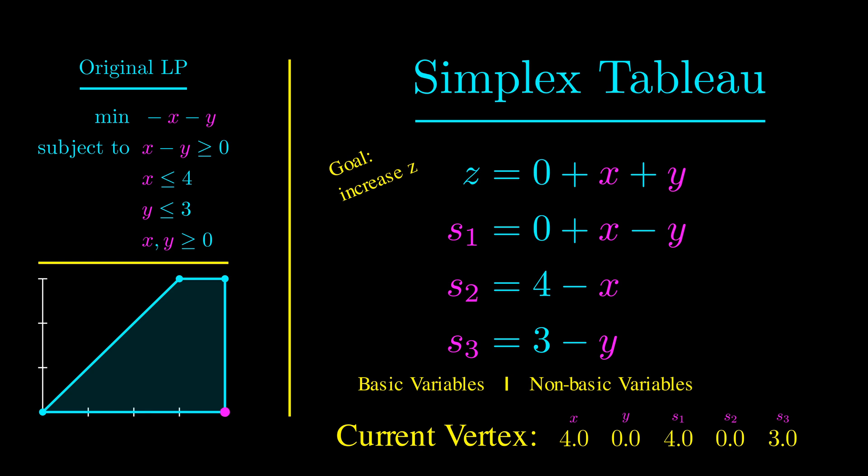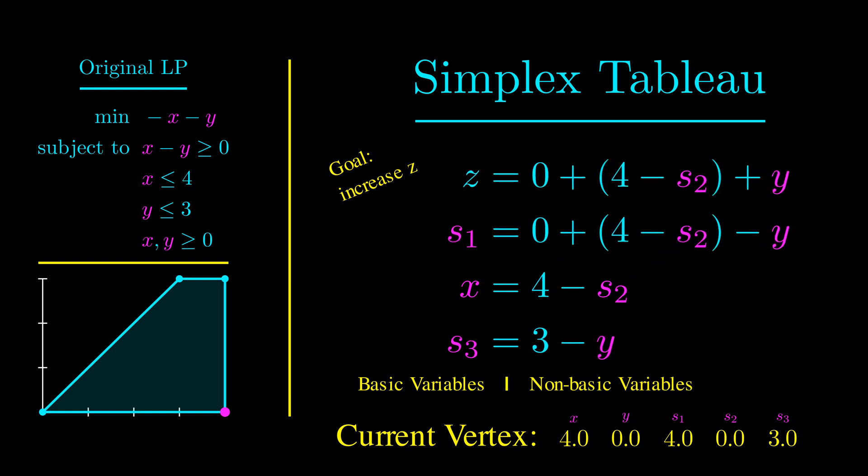Okay, we can increase x to 4, but then it becomes a basic variable. S2 is now zero and becomes non-basic. So we have to follow our rule and move x to the left-hand side of the tableau. We have to also get rid of all traces of x on the right-hand side by substituting in this new equation. Then we simplify.